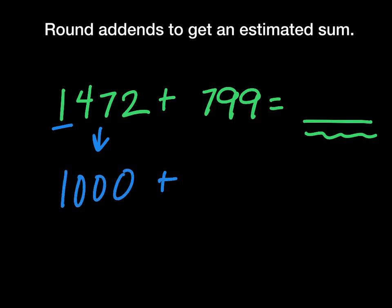And if I'm rounding this number to the nearest thousands place, I see that there is no number there, but I'm gonna look next door. I'm gonna think about my number line. On one side would be zero, on the other side would be a thousand, and 799 would be closer to 1,000.